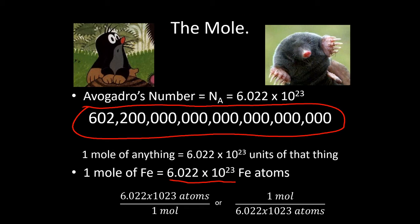We're going to use Avogadro's number to convert between the number of moles of something and the actual number of particles of something. It is usually written as 6.022 × 10²³ — that is the standard notation. So if we say we have a mole of something, we have 6.022 × 10²³ of that thing. We can use this as a conversion factor to convert back and forth between the number of atoms or molecules and the number of moles.